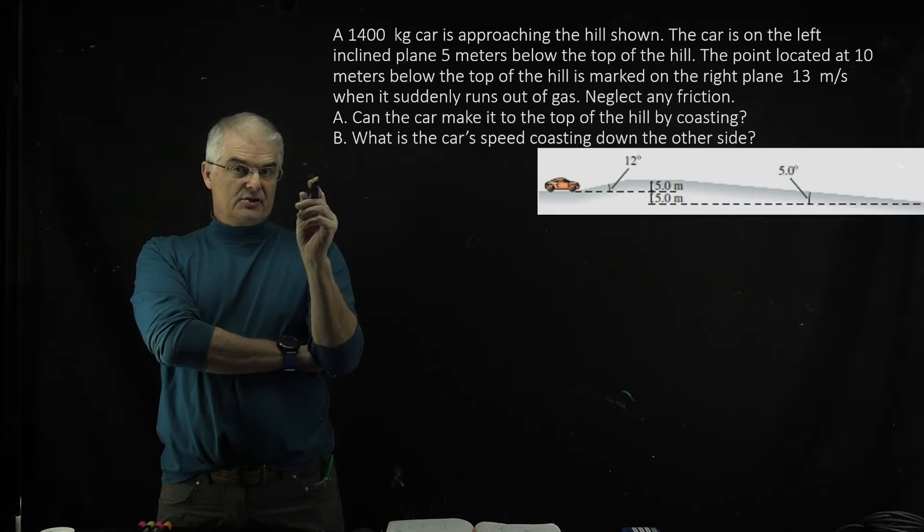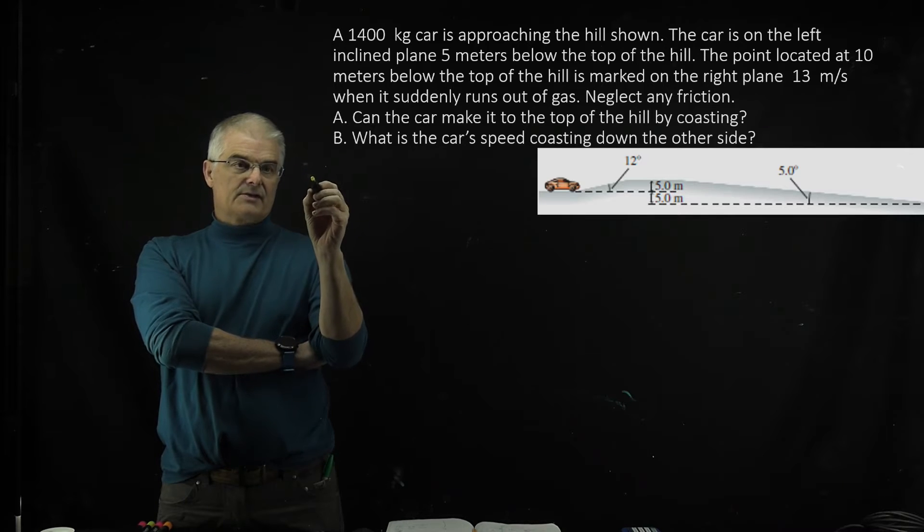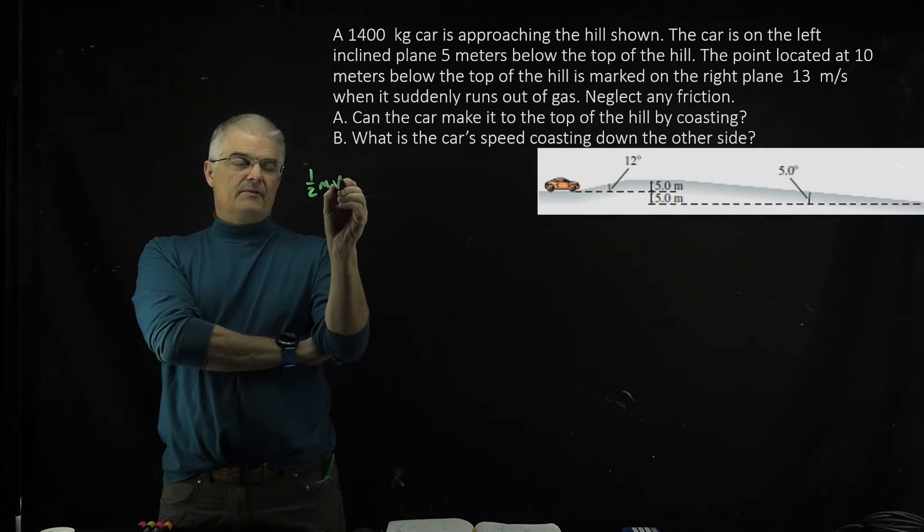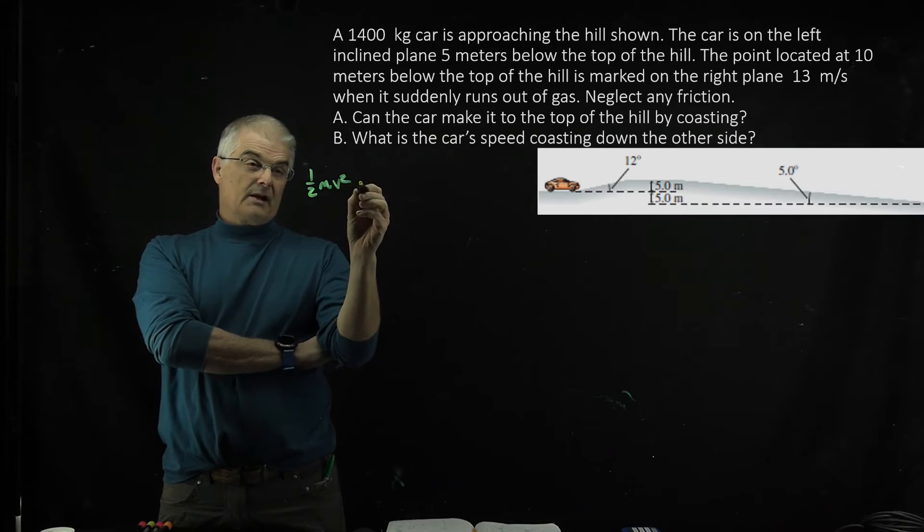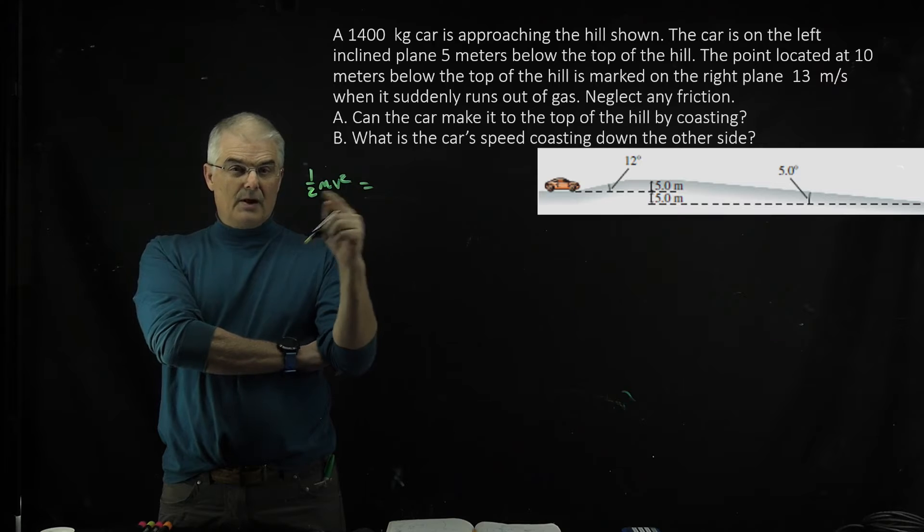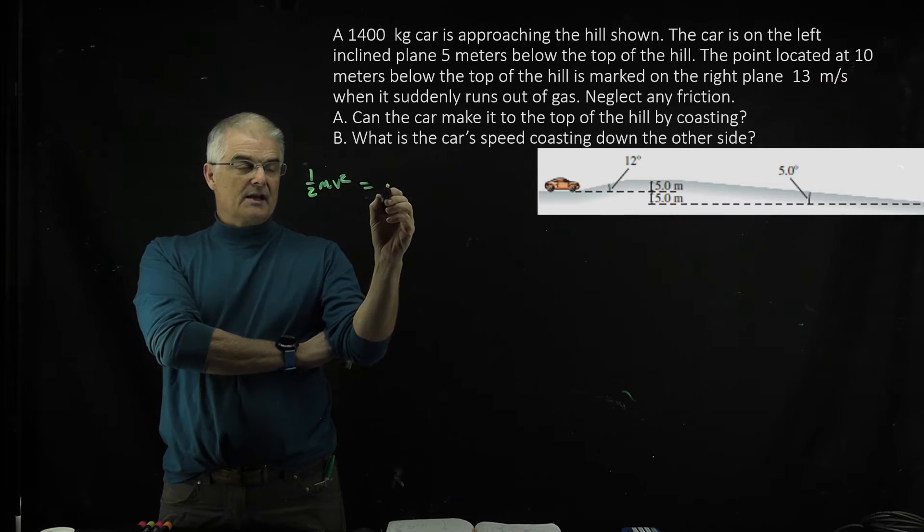Well, he's got kinetic energy just as he's about to run out of gas, so you've got one-half mv squared. You know his velocity in this case is 13 meters per second. You know the mass, and you're going to set that equal to the height of the hill that he's going to have to climb.